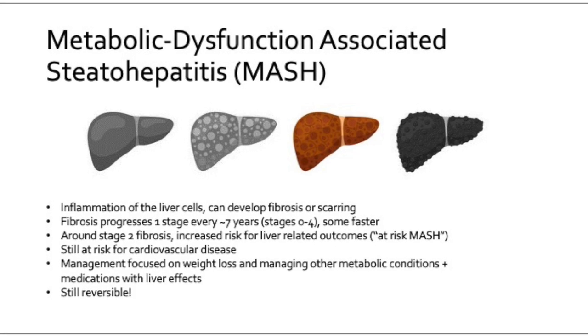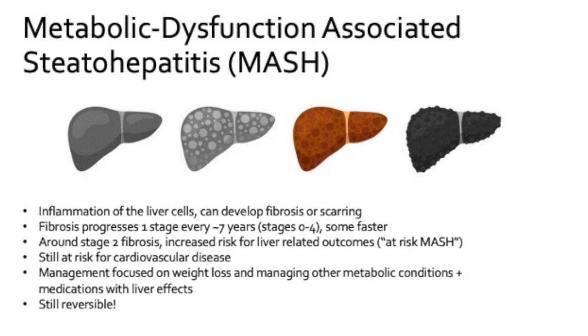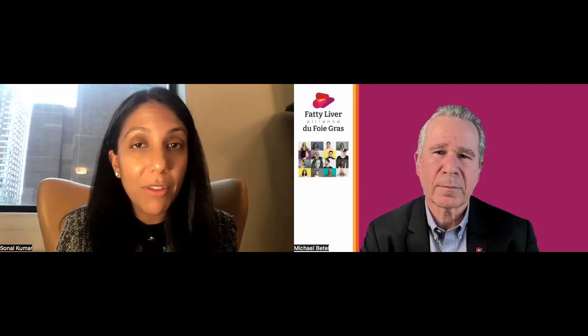When you have steatohepatitis, there is damage to the liver cells — the cells are breaking apart, they're inflamed. The good thing about the liver is that it has the ability to regenerate. So although you're damaging these liver cells, the liver is working a little bit extra hard but is able to regenerate new healthy liver cells. But as long as you have the underlying risk factors, that disease can progress and you can get scarring in the liver — we call that scarring fibrosis. We stage fibrosis anywhere from zero, meaning no fibrosis and no long-term damage, to stage four, which is cirrhosis.